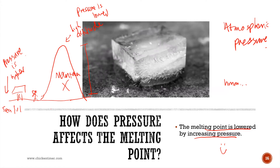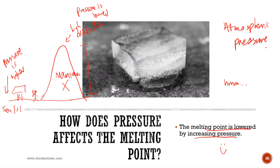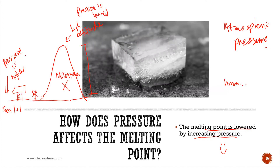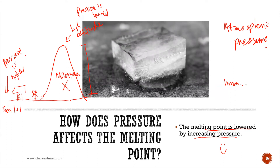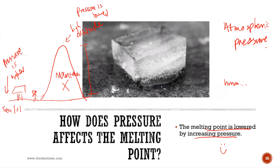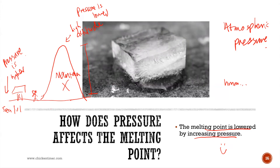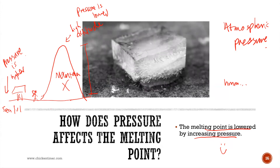At high altitudes there is less air, while at sea level there is more air. Air exerts pressure on everything around it. If you have more air, you have higher atmospheric pressure. If you have less air, you have lower atmospheric pressure.